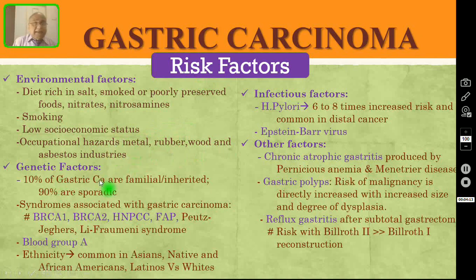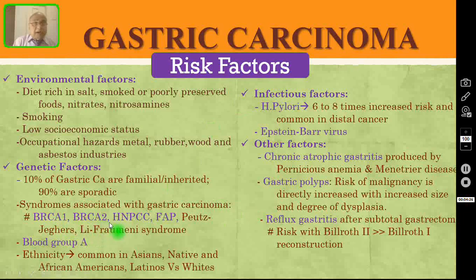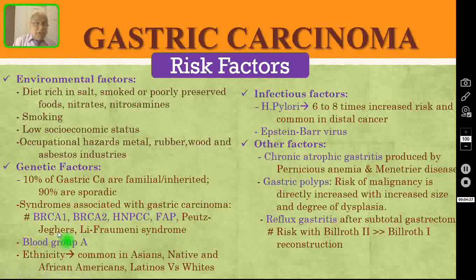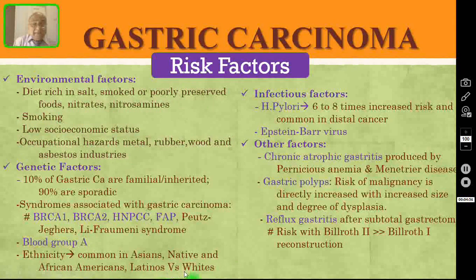Genetic factors: 10% of gastric cancers are familial or inherited and 90% are sporadic. Syndromes associated with gastric carcinoma include BRCA1, BRCA2, hereditary non-polyposis colorectal cancer, familial adenomatous polyposis, Peutz-Jeghers syndrome, and Li-Fraumeni syndrome. It is also associated with blood group A. Regarding ethnicity, it is common in Asians, Native and African Americans, and Latinos, but not very common among whites.